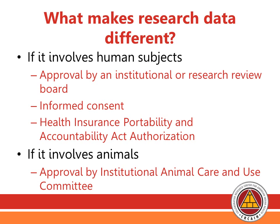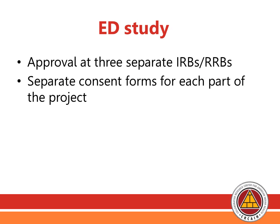If your study involves animals rather than humans, it's a different process — you would need approval from an Institutional Animal Care and Use Committee to ensure animals are treated humanely. In the emergency room study, we went the human subjects route, obtaining approval from three separate IRBs for our different research sites. Because we collected data in many different ways, we went through a separate consent process with each IRB for each part of the project.